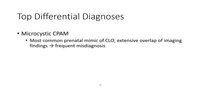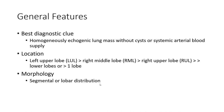Top differential diagnosis includes microcystic CPAM. Best diagnostic clue is a homogeneously echogenic lung mass without cystic components or systemic arterial blood supply. Location is predominantly the left upper lobe, then right middle lobe, then right upper lobe, followed by lower lobes.